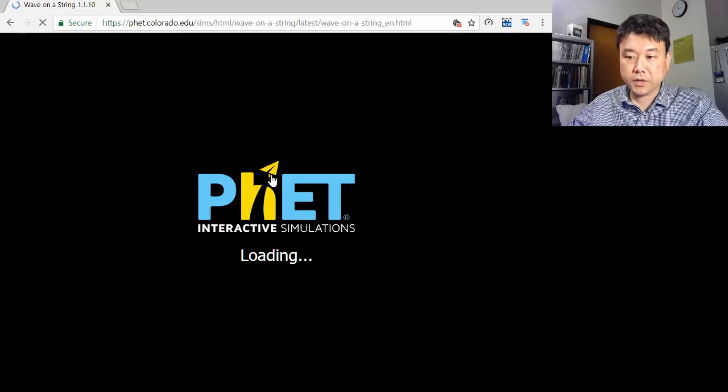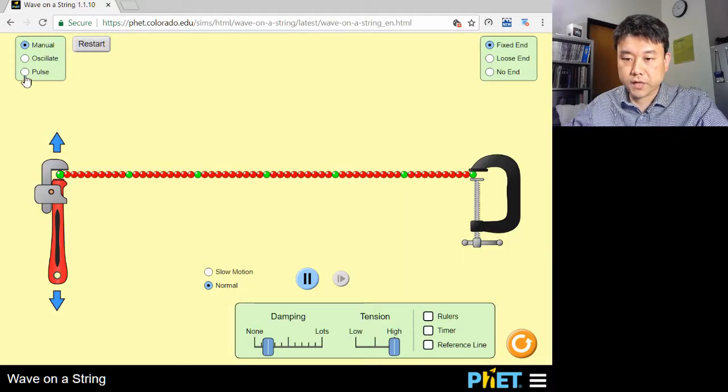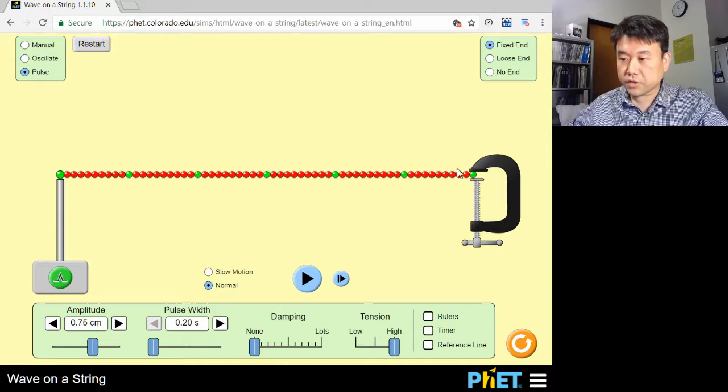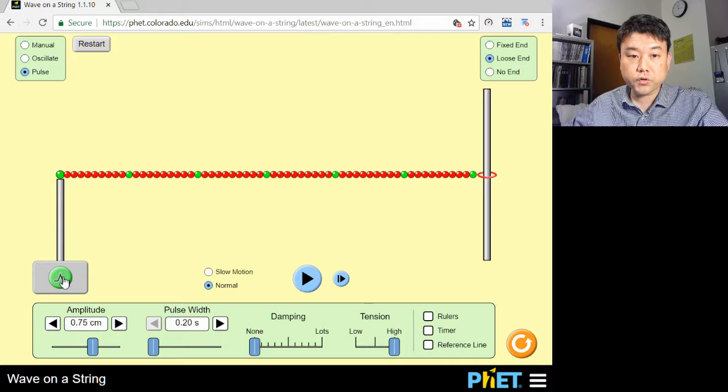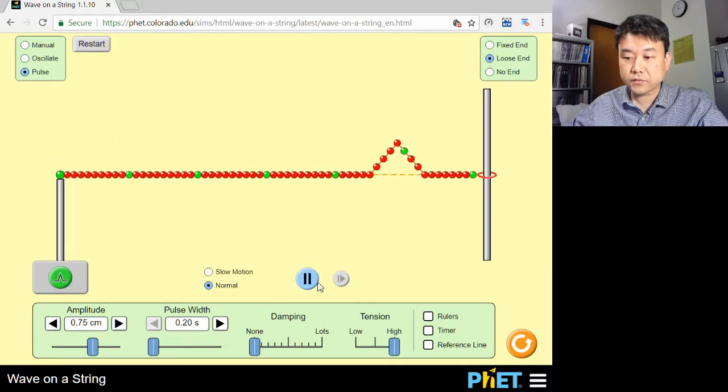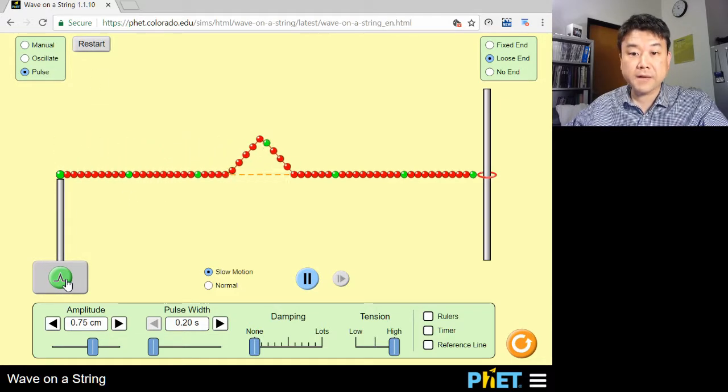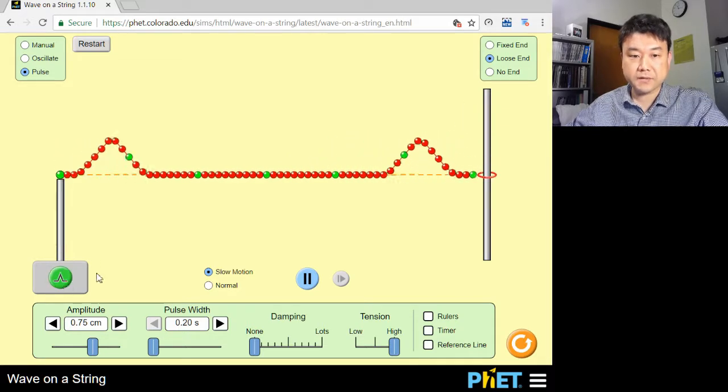Using this PhET simulation, I'm going to generate wave pulses. The end of this string is terminated with this ring, which is going to cause the pulses I send to reflect. Now, let me send two pulses, separated a little bit in time and distance. And let's see what happens.